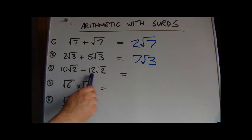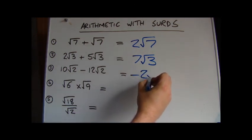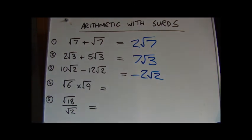we've got 10 root 2 minus 12 root 2. This is like 10x minus 12x. It's going to give us minus 2x. In this case, minus 2 root 2. With multiplication, we can combine the two numbers into a single